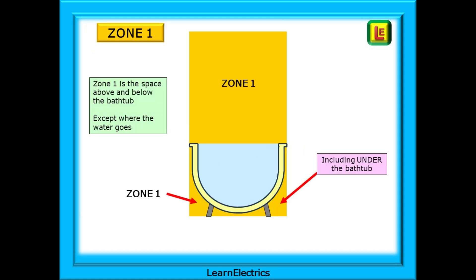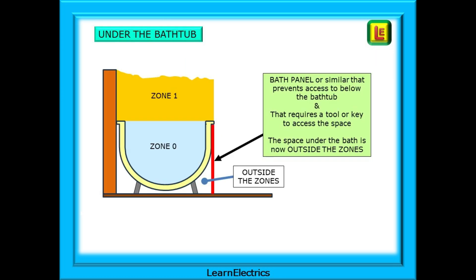Zone 1 is the space above and below the bathtub that is not zone 0. Remember, this includes the area under the bathtub unless something else happens. In this drawing the bathtub is against a wall on one side and a bath panel has also been installed. If the bath panel requires a tool — a screwdriver or a key to remove it — then the space under the bath is classed as being outside the zones and not zone 1.